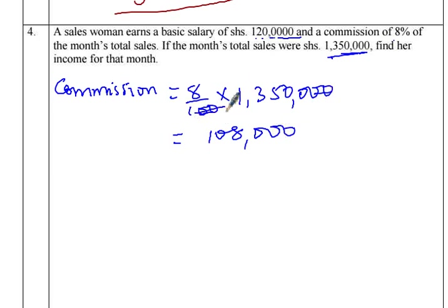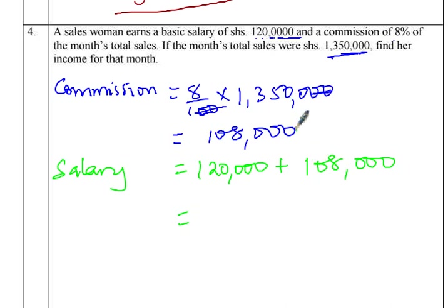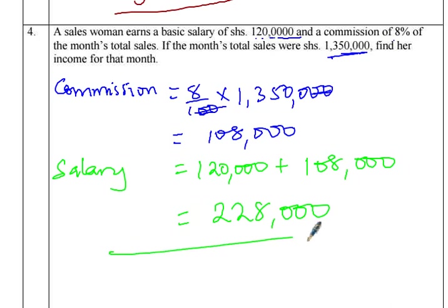Now that we know her commission, we find her monthly salary: basic salary plus her commission for that month. The basic salary is what the company gives her even if she sells nothing. Since she made sales, we add the commission to the basic salary, giving a total of 228,000. That is the saleswoman's income for that month.